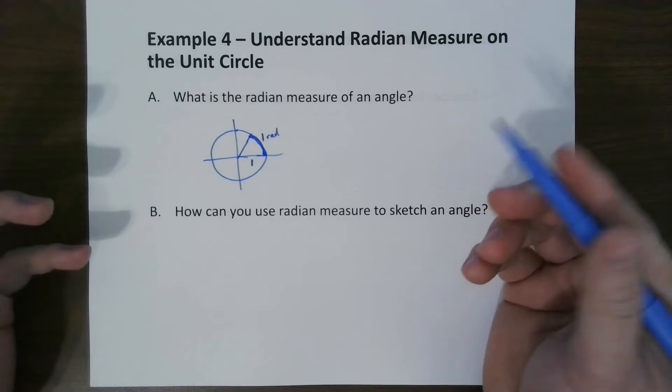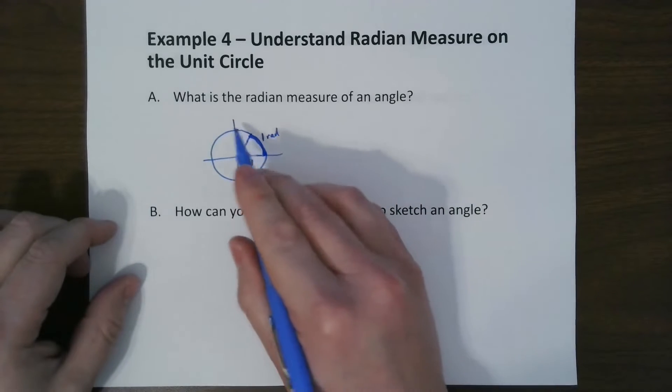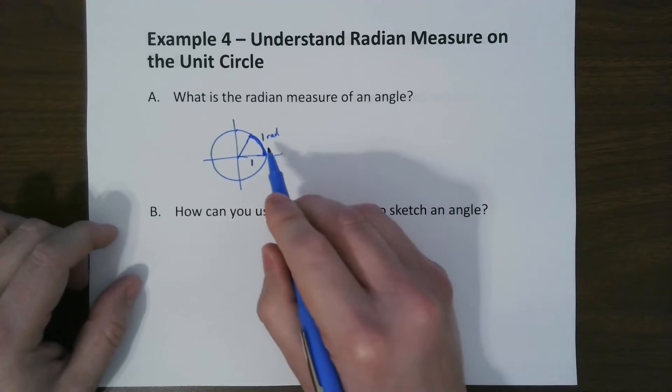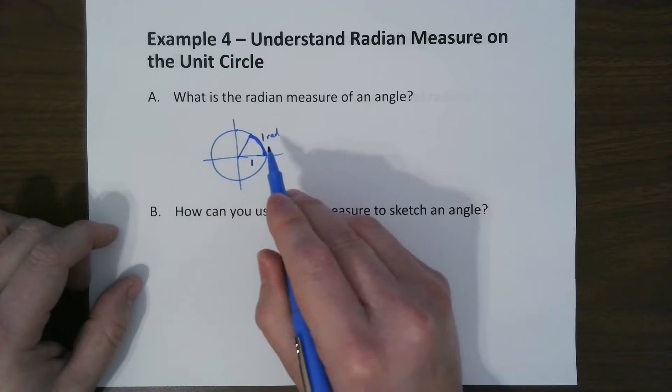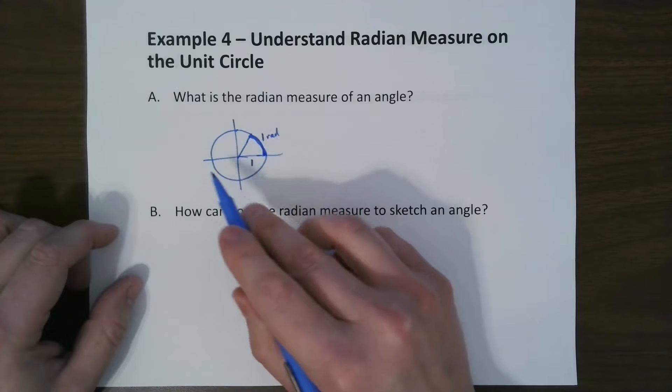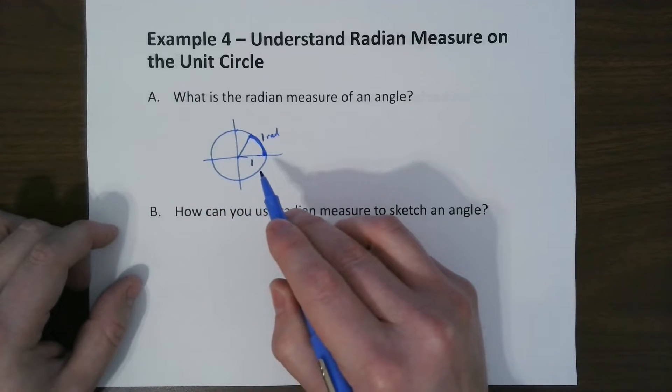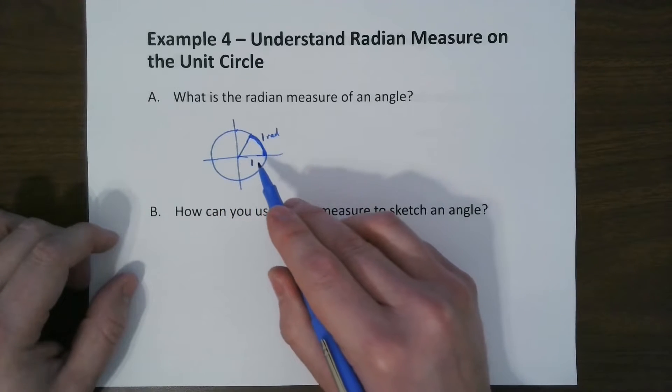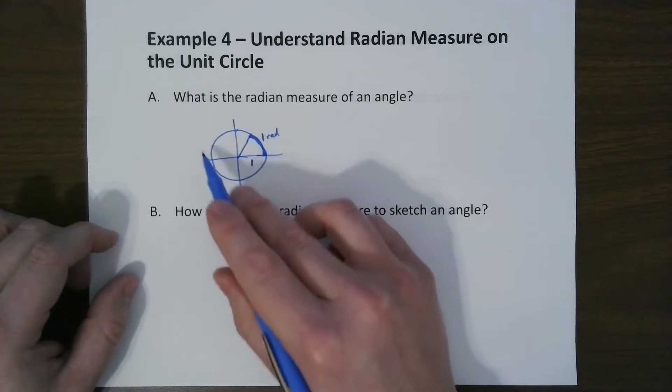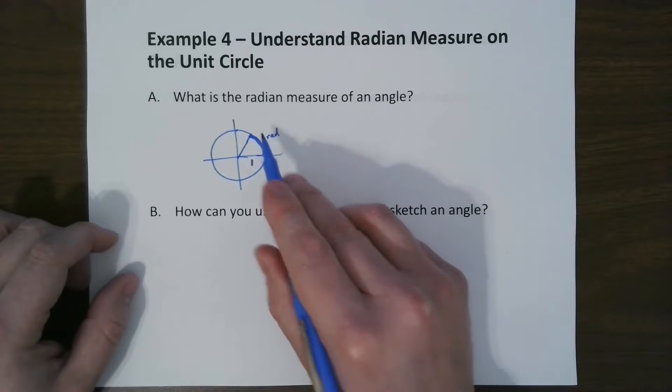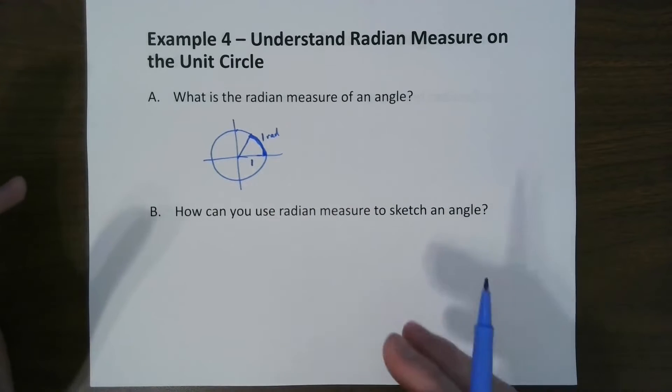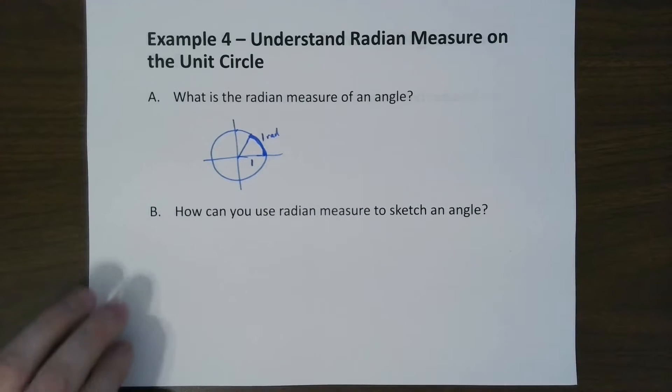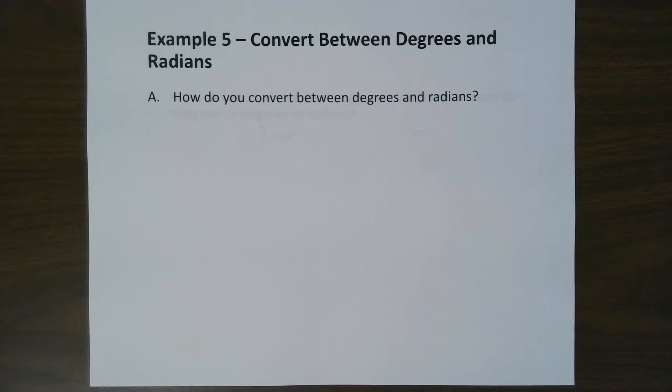And so basically, that's how it works. And you basically just count around. Now if you think about this, what's the distance of halfway? Well, we know a circle has a circumference of 2 pi r. And if r is 1, then we have a distance of 2 pi. So 360 is connected with 2 pi.